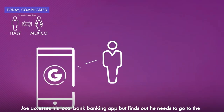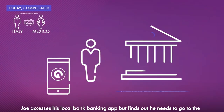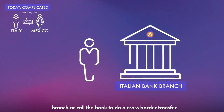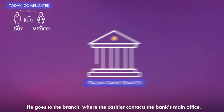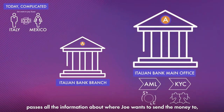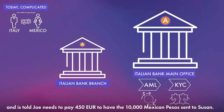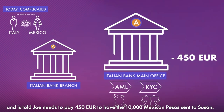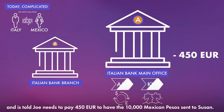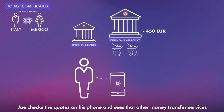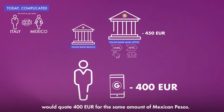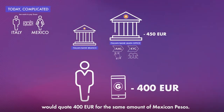Joe accesses his local banking app, but finds out he needs to go to the branch or call the bank to do a cross-border transfer. He goes to the branch, where the cashier contacts the bank's main office, passes all the information about where Joe wants to send the money, and is told Joe needs to pay 450 Euro to have the 10,000 Mexican Pesos sent to Susan. Joe checks the quotes on his phone and sees that other money transfer services would quote 400 Euro for the same amount of Mexican Pesos.